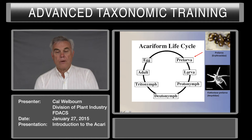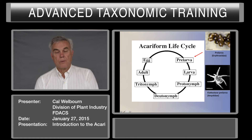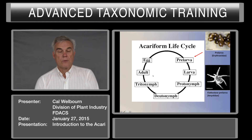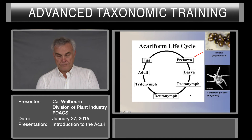Larvae in most mites are hexapods — three pairs of legs. And then the protonymph, deutonymph, tritonymph, and adult, in most cases, are octopods.